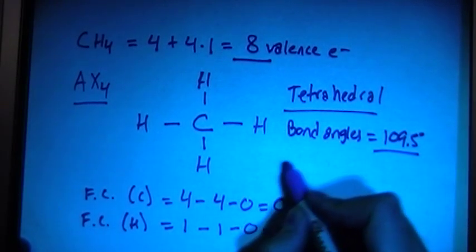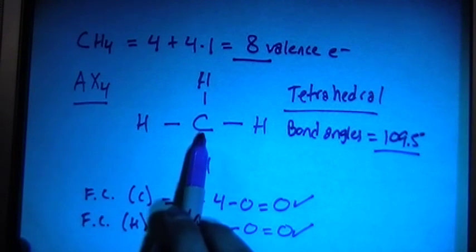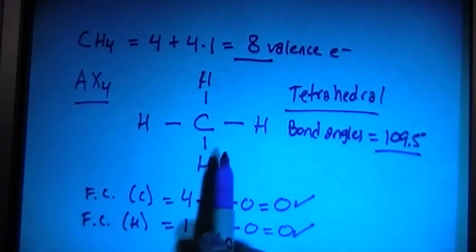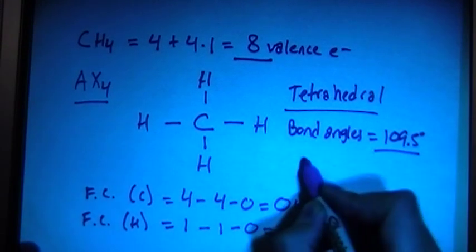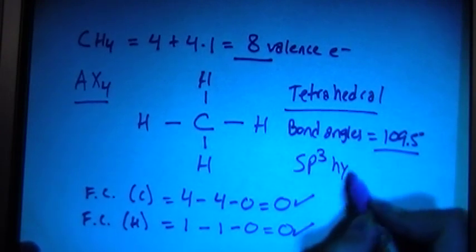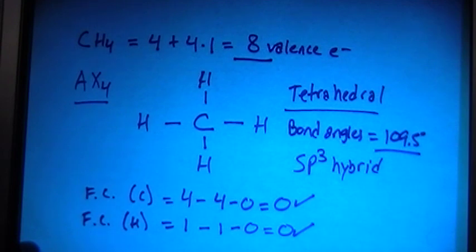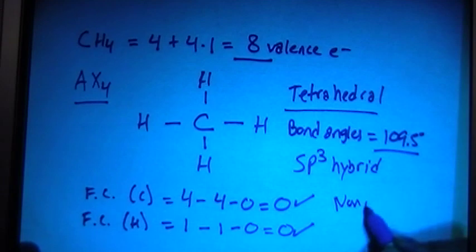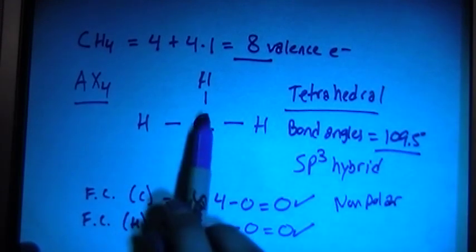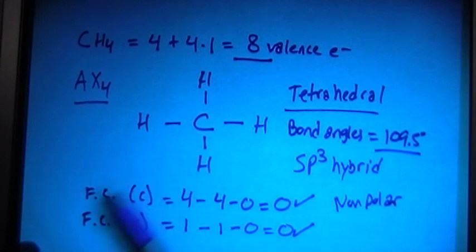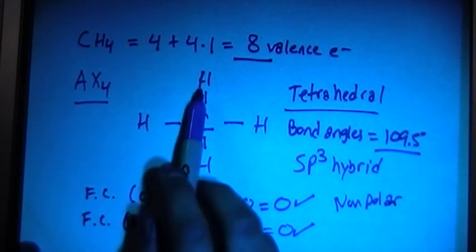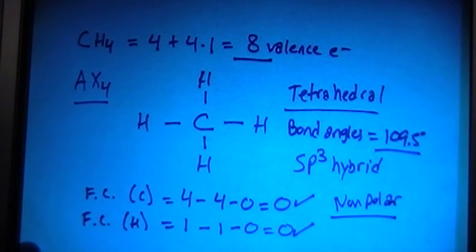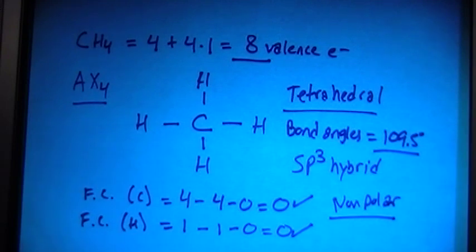And the hybridization of the carbon atom — because it has four bonding sites, it's going to need four orbitals — so it's going to be sp3 hybrid. And as is the case with most organic molecules, it's going to be non-polar, because each hydrogen will cancel out their net dipole moment, which will sum up to zero, because the electronegativity is the same for each hydrogen, so they end up canceling each other out, causing this organic molecule to be non-polar.